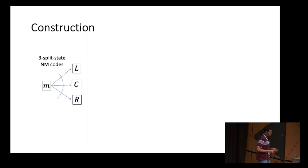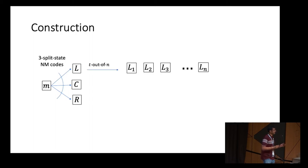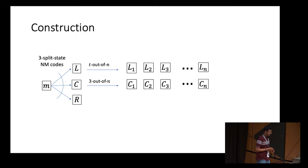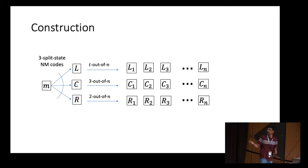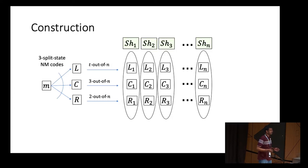In the sharing phase, given message M to split into N shares: first encode M using a three-split-state non-malleable code to get states L, C, and R. Then secret share L using any T-out-of-N secret sharing scheme such as Shamir's to get shares L1 to LN. Share C using a 3-out-of-N secret sharing scheme to get C1 to CN. Finally, secret share R using a 2-out-of-N secret sharing scheme to get R1 to RN. The share for party I is the tuple (LI, CI, RI). Given any T shares, reconstruction uses the underlying secret sharing to recover L, C, R, then applies the non-malleable code's decoding to recover M.